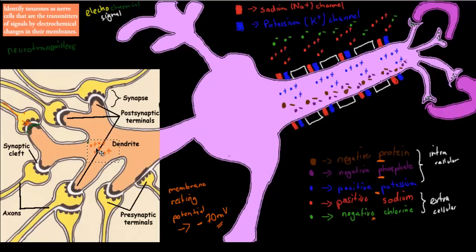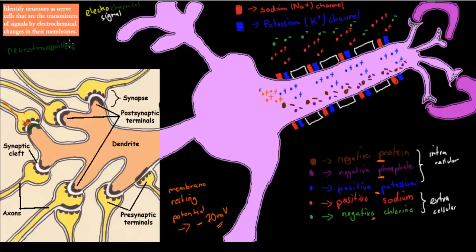These positive particles travel down the dendrite and move towards the axon. When they reach the axon, remember we had a resting potential of minus 70 millivolts, and at minus 70 millivolts the sodium gates are closed — sodium particles can't get in. Once these positive particles arrive, it becomes slightly less negative, dropping to around minus 55 millivolts. These positive particles have changed the resting potential into what's called the action potential.